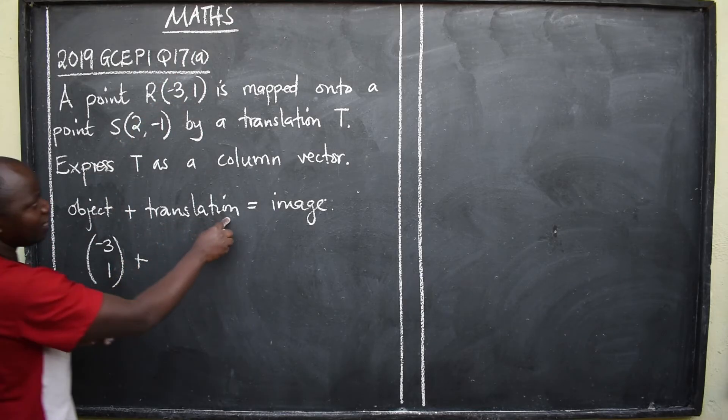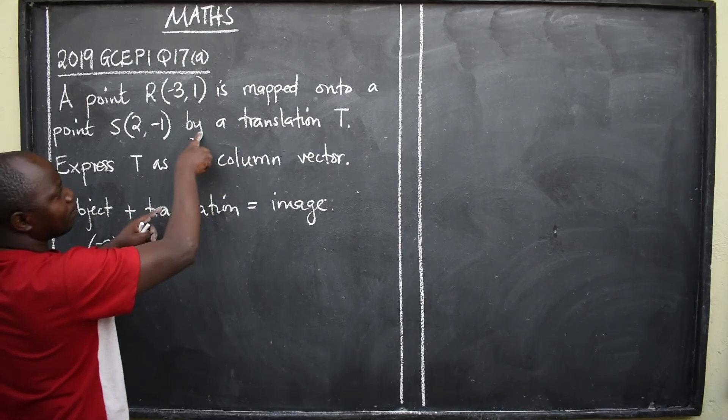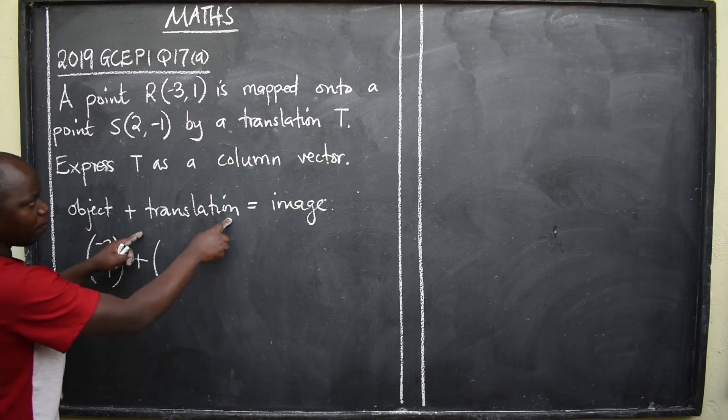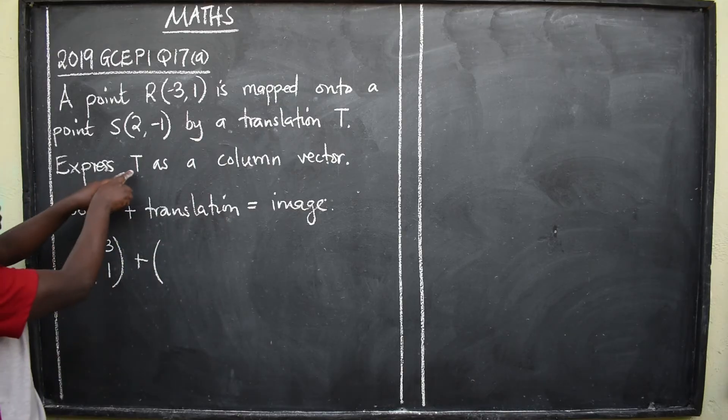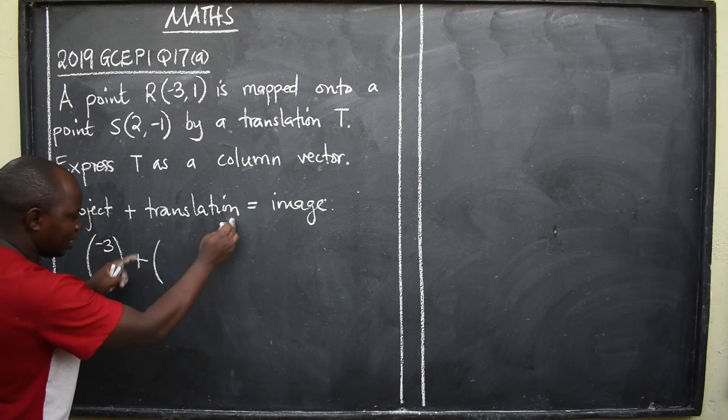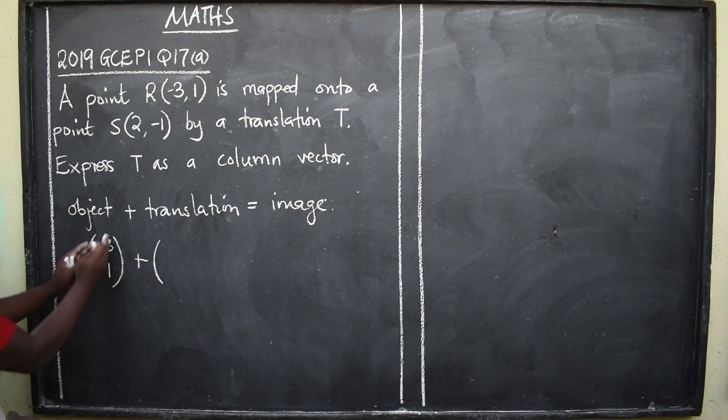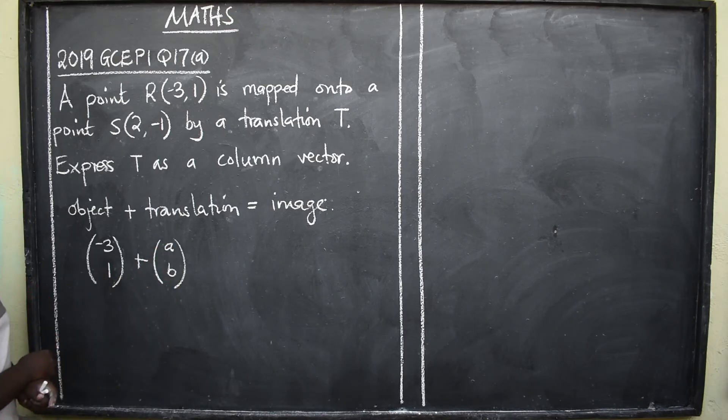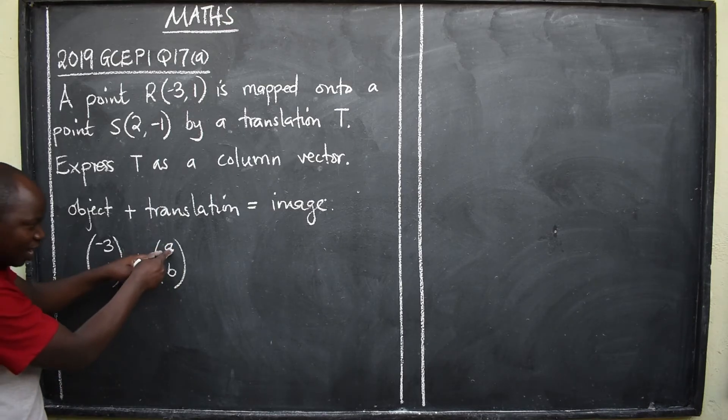Plus, translation. We are told that by a translation T, this is where the translation will be. We express this T as a column vector. So here, where there is translation, to match what we have here, we are going to say AB. So the translation will be in that form, where we need to find A and B.